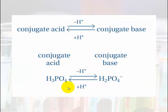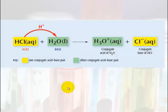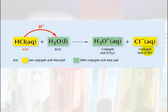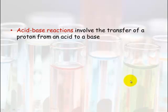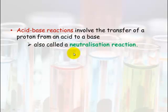Another example: hydrochloric acid reacting with a base gives the chloride ion (Cl⁻), which is the conjugate base of HCl because it has lost the hydrogen ion. Hydronium (H3O+) is the conjugate acid of H₂O because it has gained a hydrogen ion. When acid-base reactions involve the transfer of a proton from an acid to a base, this is known as a neutralization reaction — it's essentially an acid-base reaction.